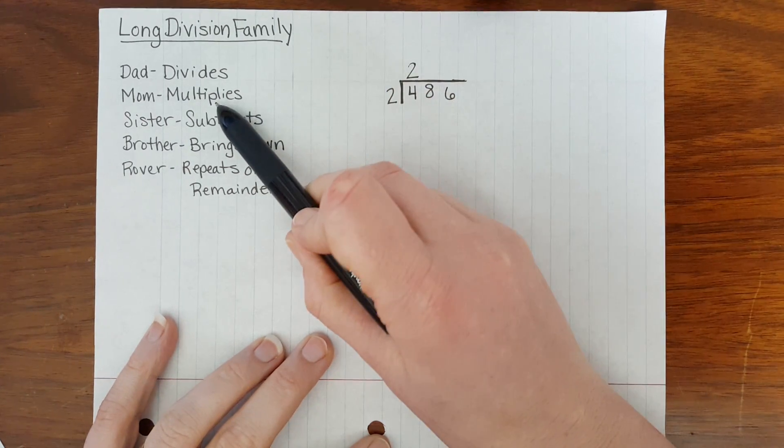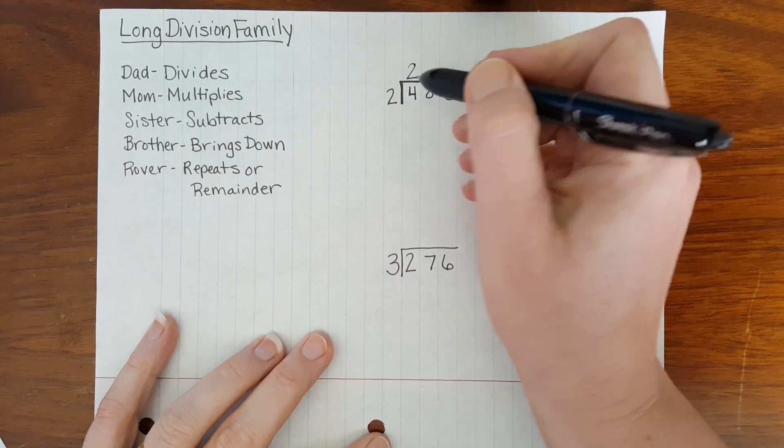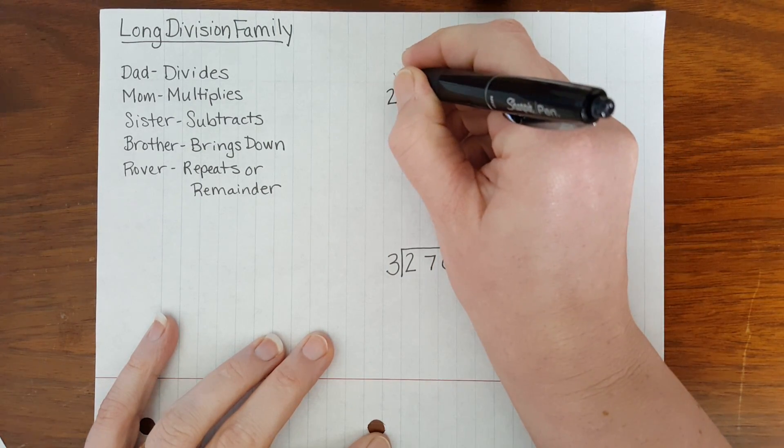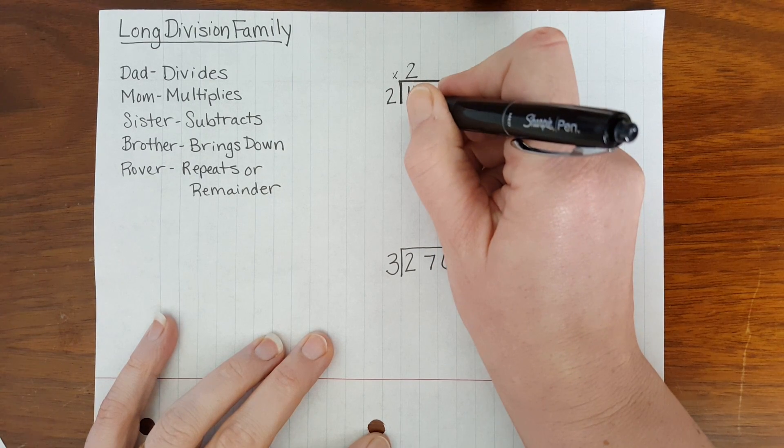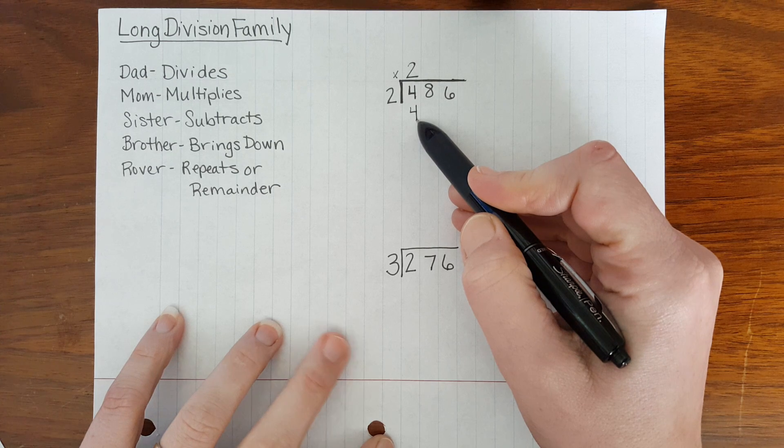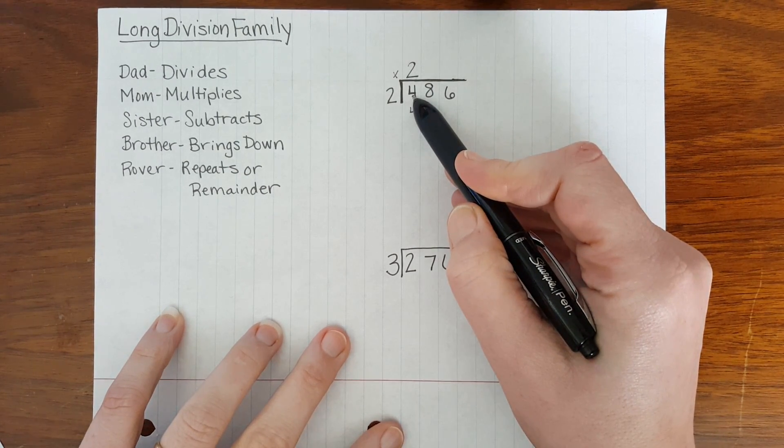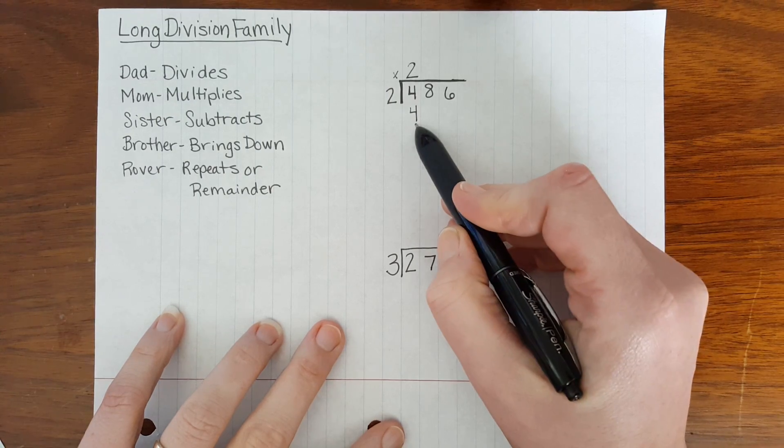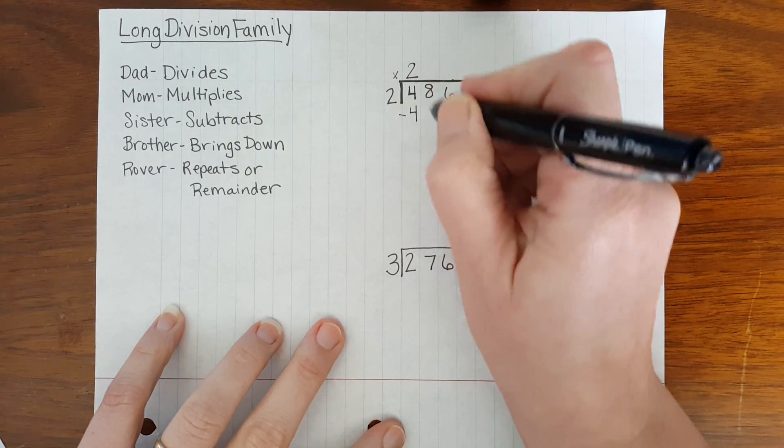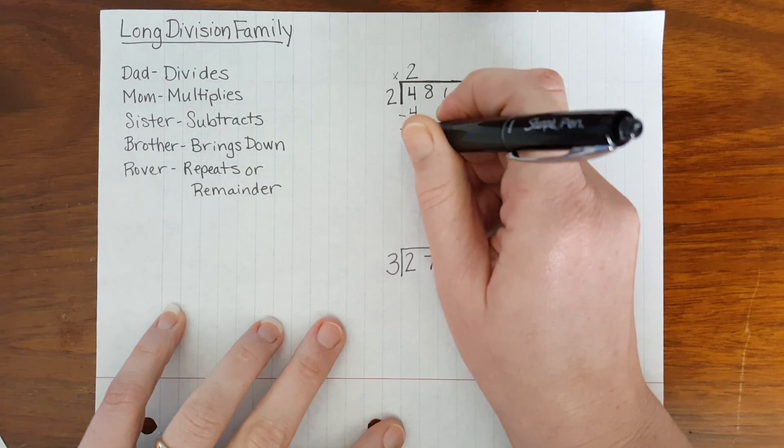Mom double-checks dad's work and mom multiplies. Mom says 2 times 2 equals 4. She places the answer to that product, 2 times 2, right below the number 4 in our dividend. Then sister subtracts. 4 take away 4 is 0.